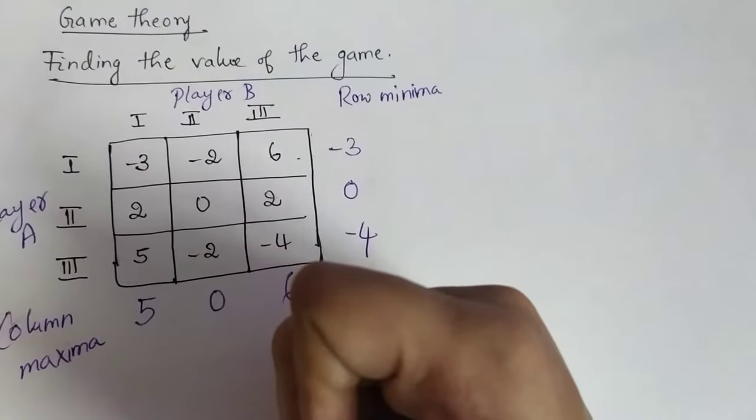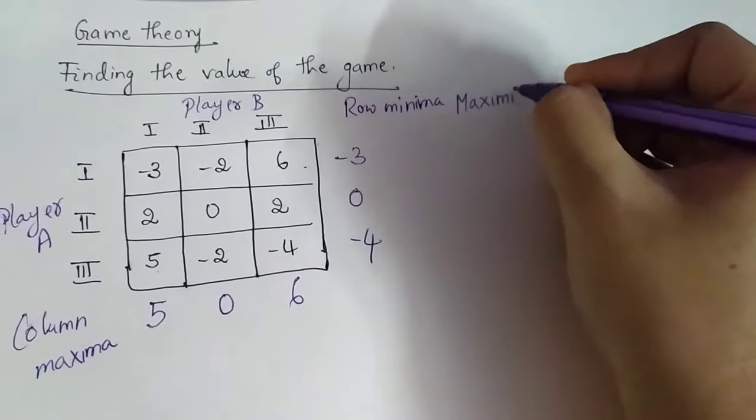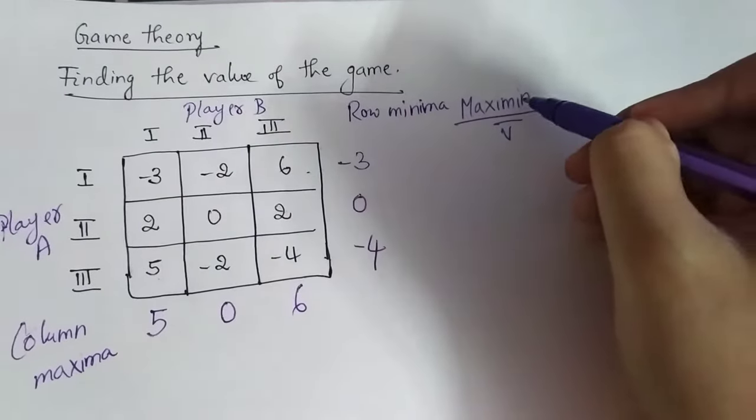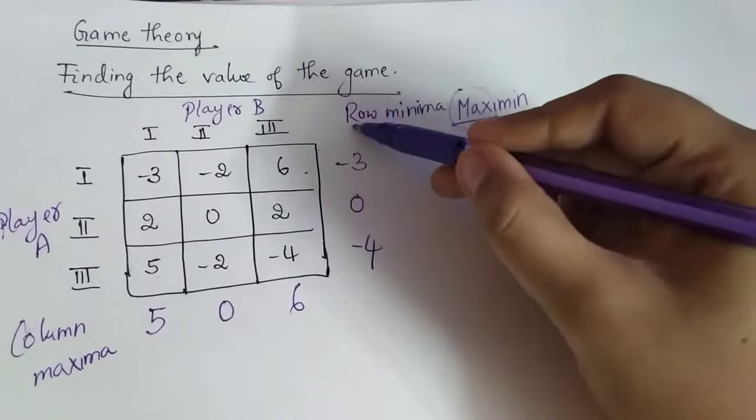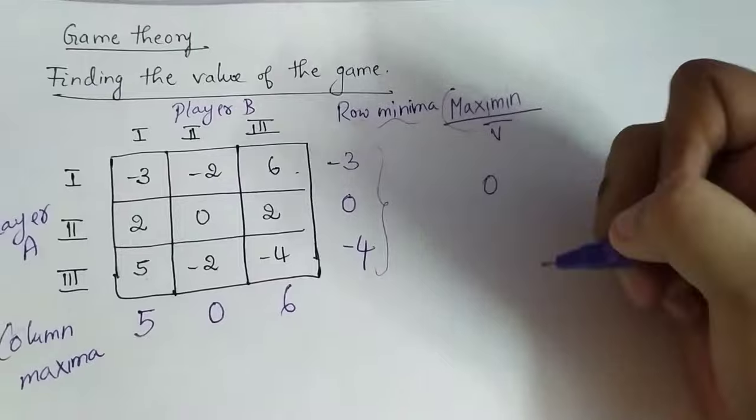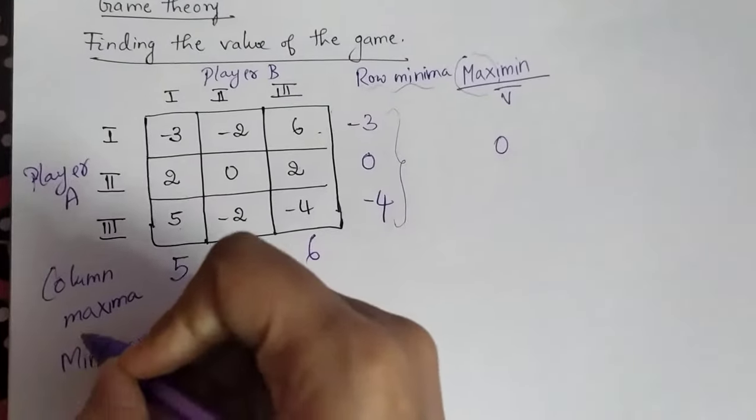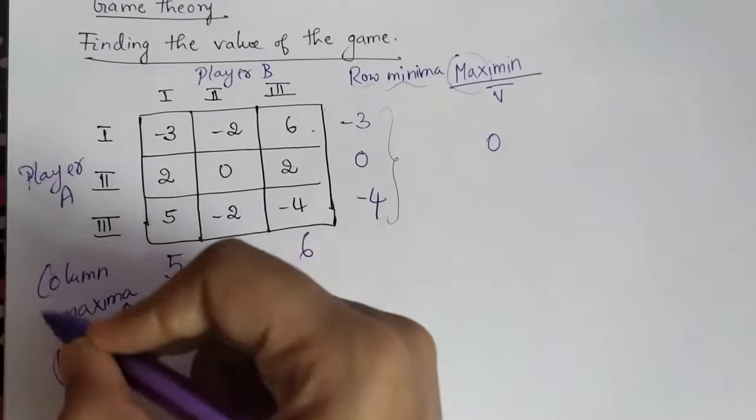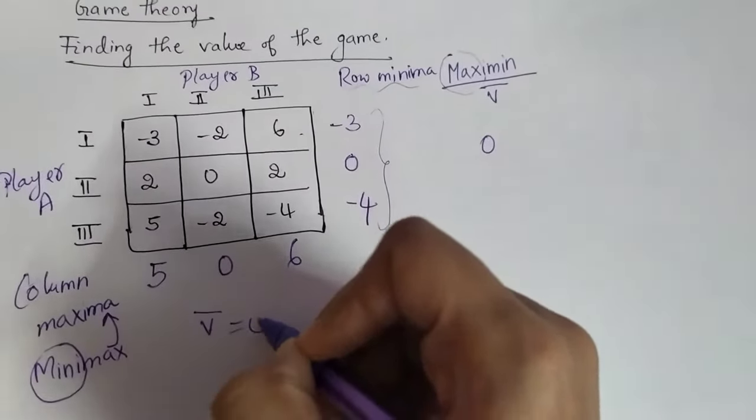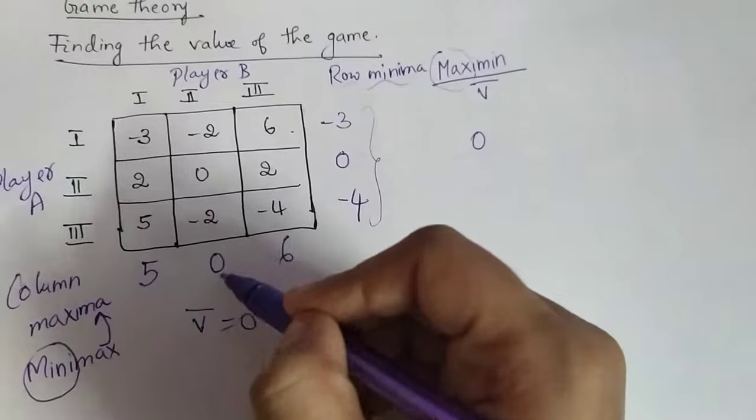After you have found out the row minima, you will have to find out the maxi-min, which is represented by v bar. What is maximum of the minimum values obtained? The maximum here is zero. And in column-wise you will have to select the mini-max, meaning the minimum of the maximum. Here you have to find out the maximum, and in that the minimum is zero.